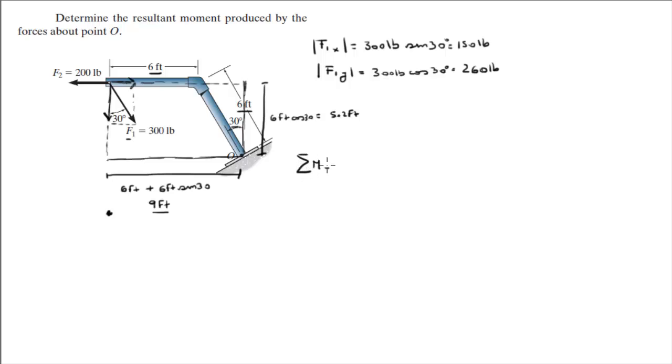So the sum of the moments at point O, assuming counterclockwise is positive, is equal to: First, you have this force going straight down, pushing this lever arm to go counterclockwise. The length of the lever arm is 9 feet and the force going straight down is 260 pounds, times the length of the lever arm, which is 9 feet.